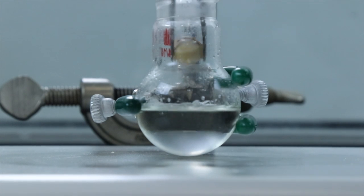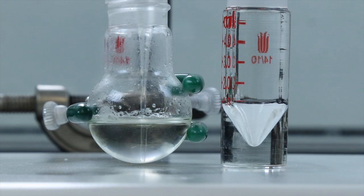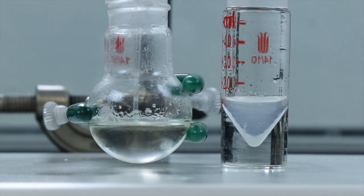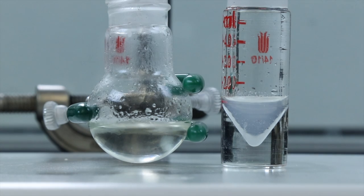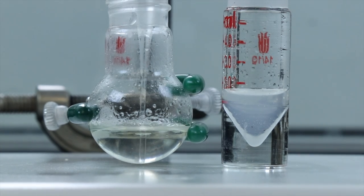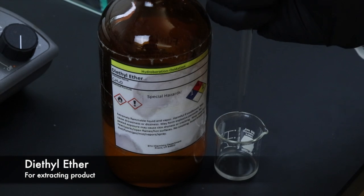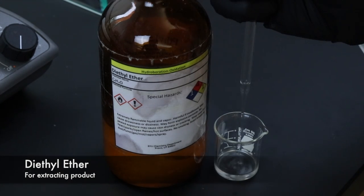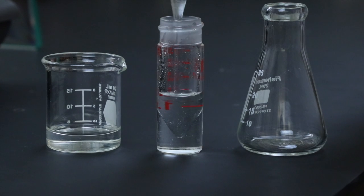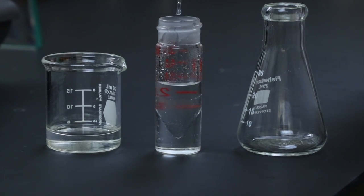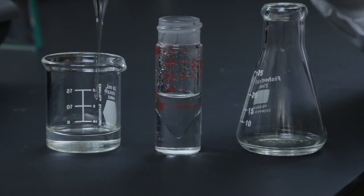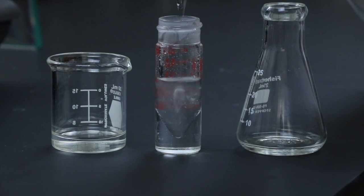I'll remove the spin bar, and then move all of the aqueous layer into a conical vial, where the extractions can then be performed. To do those extractions, I'll be using some more diethyl ether, and again, diethyl ether is less dense than water, so it'll be on top of the aqueous phase, and I'll go ahead and do 3 of those extractions.